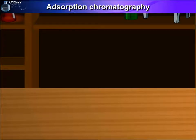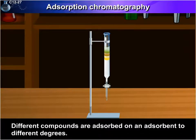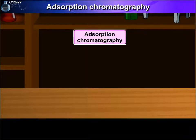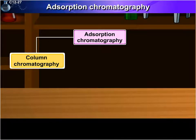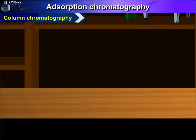Adsorption chromatography is based on the principle of differential adsorption. Different compounds are adsorbed on an adsorbent to different degrees. There are two main types of adsorption chromatography: column chromatography and thin layer chromatography. Let's have a look at column chromatography.